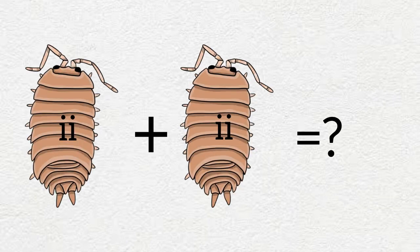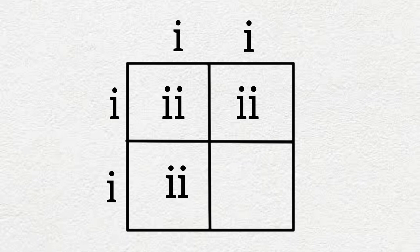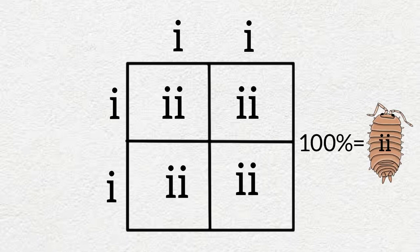Now let's take two of these homozygous recessive isopods and breed them together. The Punnett square is complete and we can see that 100% of the offspring will now be homozygous recessive and will have our desired orange carapace.